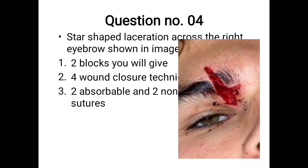The fourth question showed a star-shaped laceration across the right eyebrow and asked which two nerve blocks you would give. You can write: supra-orbital nerve block and supratrochlear nerve block.